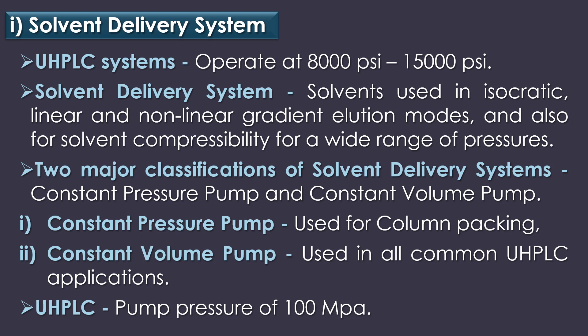The UHPLC system regularly operates at 8,000 PSI to 15,000 PSI. The solvent delivery system must also counterbalance for various solvents used in isocratic, linear and non-linear gradient elution modes, and also for solvent compressibility across a wide range of pressures. The two major classifications of solvent delivery system are constant pressure pump and constant volume pump. Constant pressure pump is used for column packing, while the constant volume pump is mostly used in all common UHPLC applications. HPLC has a pump pressure of 40 MPa whereas UHPLC has a pump pressure of 100 MPa.